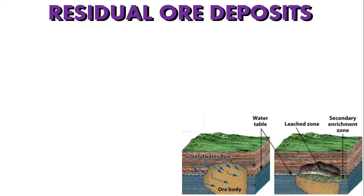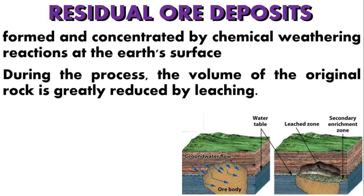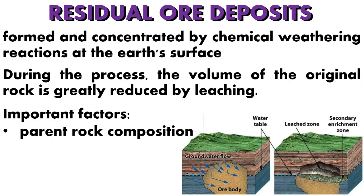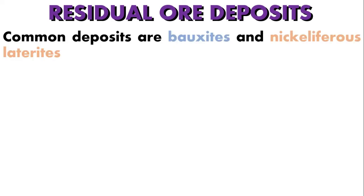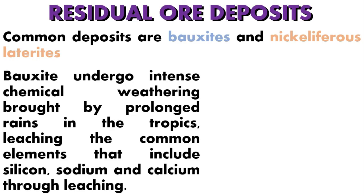Next, we have residual ore deposits. This is a type of deposit that results from the accumulation of valuable materials through chemical weathering processes. During the process, the volume of the original rock is greatly reduced by leaching — the removal of soluble materials in rocks or ore body through the percolation of water. Some important factors for the formation of residual deposits include parent rock composition, climate — tropical and subtropical climates are favorable because they help in chemical decay — and relief, which must not be too high to allow accumulation. Common deposits are bauxites and nickeliferous laterites. Bauxites undergo intense chemical weathering brought by prolonged rains in the tropics, which leaches common elements including silicon, sodium, and calcium.